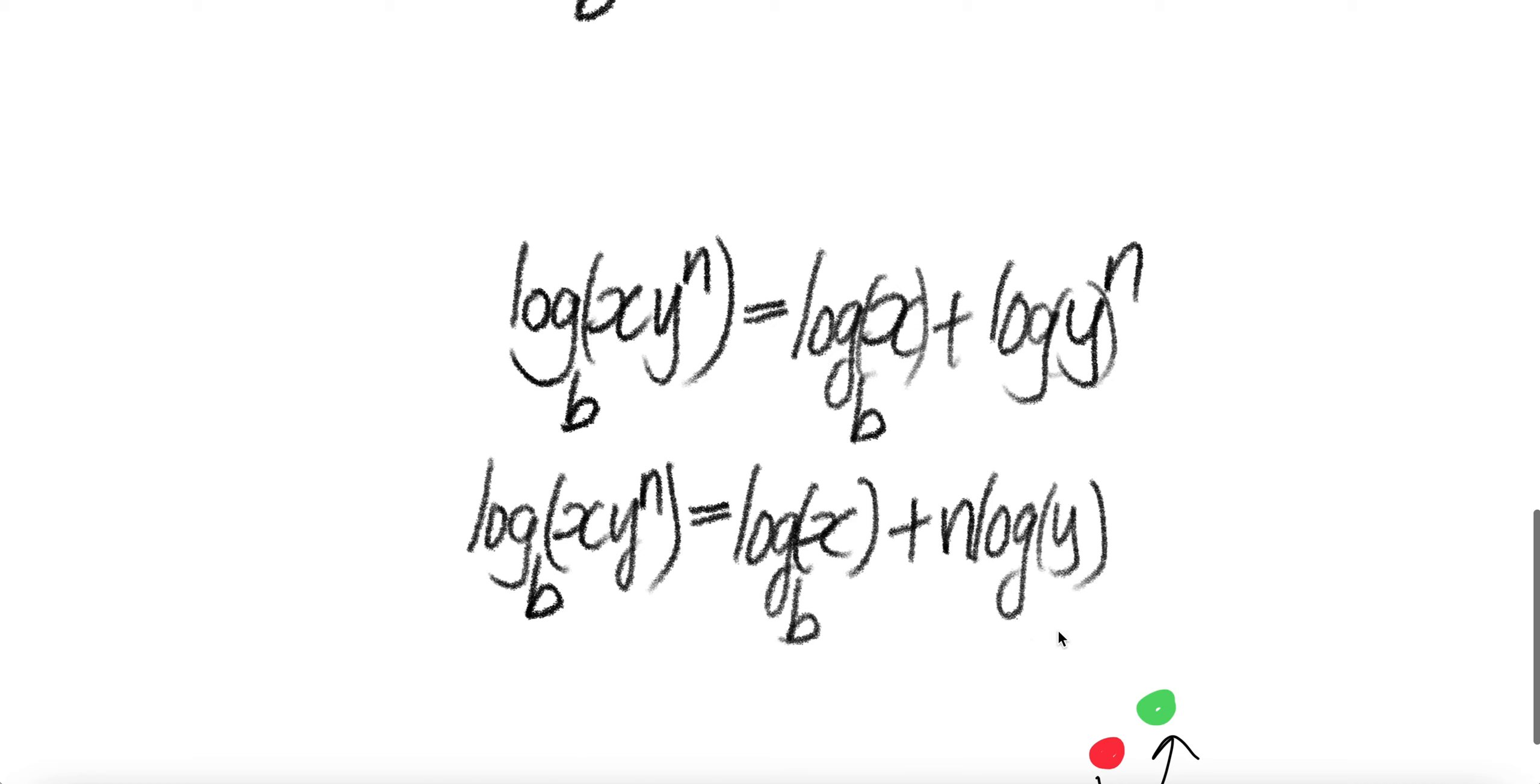Guys, missing B here, missing B here. This is log to the base B, log to the base B, log to the base B, missing B. Now this one, we can bring it down.